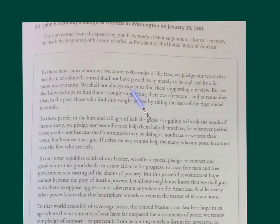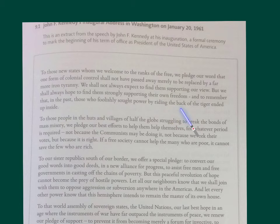'We should not always expect to find them supporting our view, but we should always hope.' Look at the lexis here — we've got 'hope,' which is more of a lexical set. Then: 'To find them strongly supporting their own freedom and to remember that in the past, those who foolishly sought power by riding the back of the tiger ended up inside.' So that's an allusion — he's using that really as an example, a sort of little story supporting the point he's making.